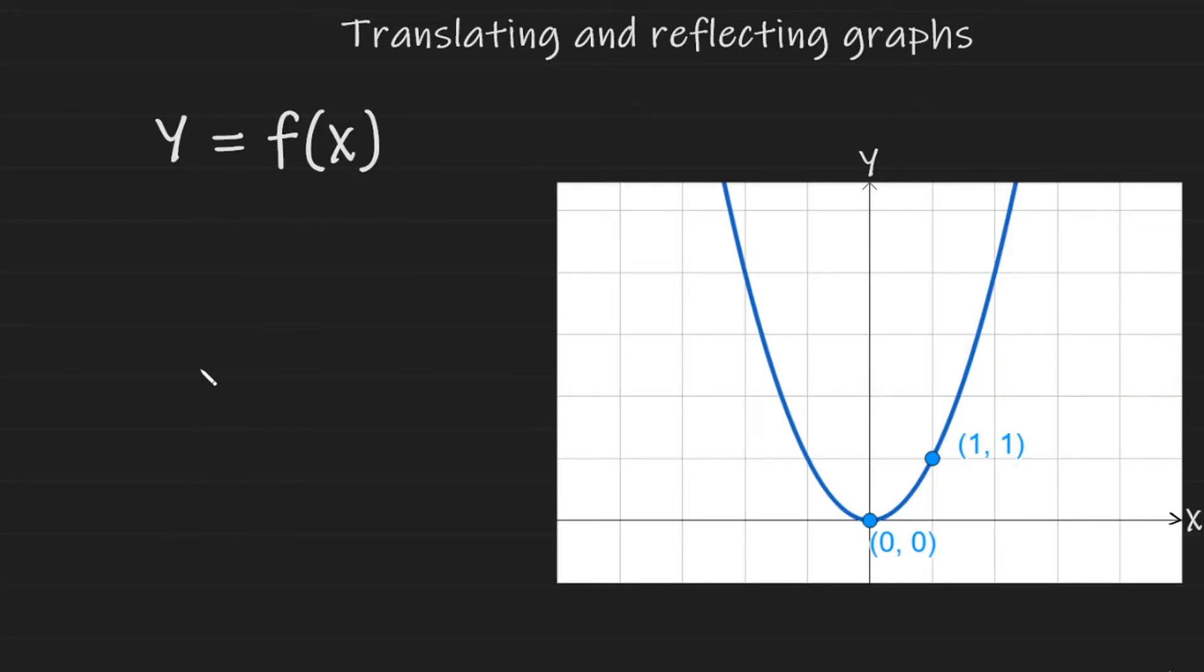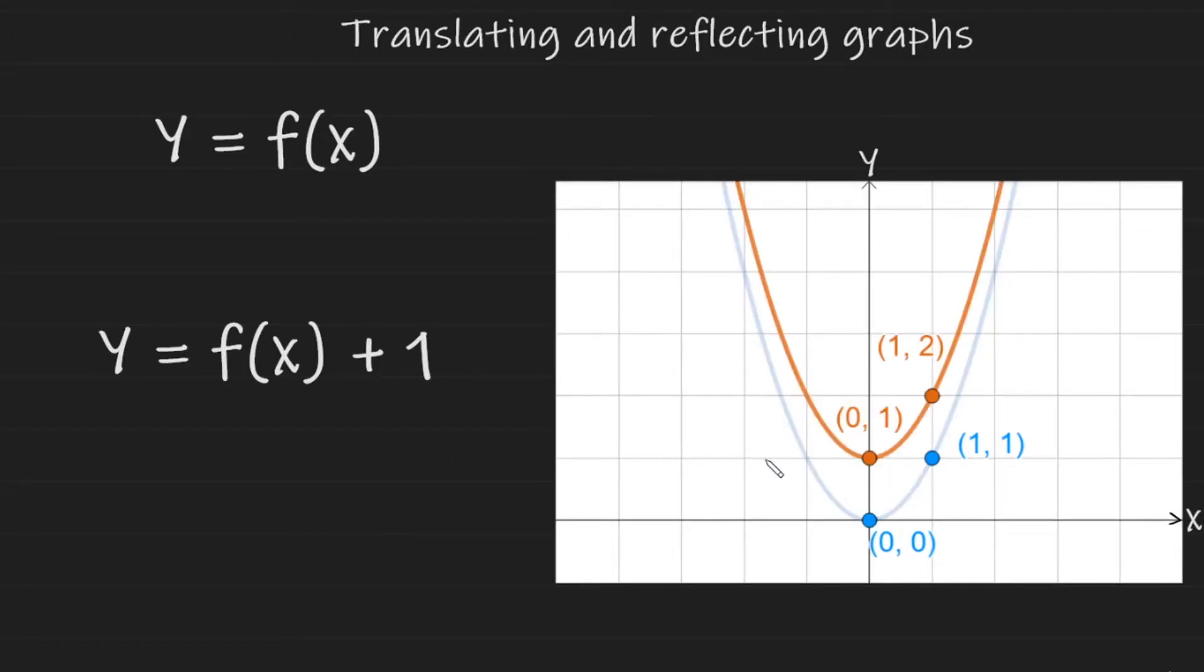Let's introduce our first translation. I'm going to add 1 to the entire function, and that looks like this. And this is how it changes the graph. Look at the coordinates. We have essentially added 1 to the y values.